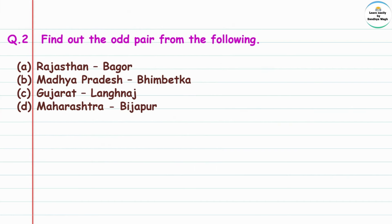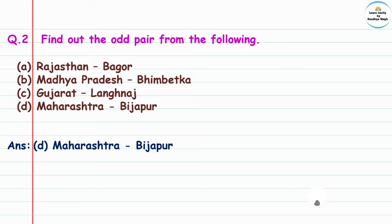Question 2: Find out the odd or incorrect pair from the following. First pair: Rajasthan–Babur — this pair is correct. Madhya Pradesh–Bhimbetka — this pair is also correct. Gujarat–Langhnaj — also correct. The D pair, Maharashtra–Vijapur — this pair is wrong, because instead of Vijapur it should be Jalgaon district. So Maharashtra–Vijapur is the incorrect pair.